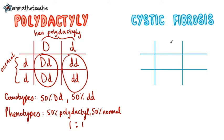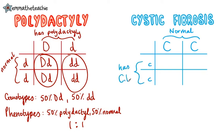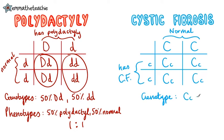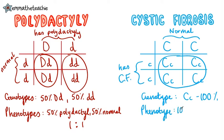Now let's look at a cystic fibrosis example. Let's start with a person that hasn't got cystic fibrosis and has no cystic fibrosis alleles, then another parent who does have cystic fibrosis. When we do our combinations, we can see that all of the offspring would have big C little c — 100% probability. As big C little c has a normal dominant allele, they are 100% normal, or non-cystic fibrosis.